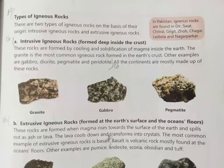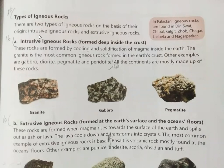There are two types of igneous rocks on the basis of their origin: intrusive igneous rocks and extrusive igneous rocks. In Pakistan, igneous rocks are found in Deir, Sawad, Chitral, Gilgit, Zohab, Chaghi, Lazuela and Nagar Parkar. Two types of igneous rocks are intrusive and extrusive.